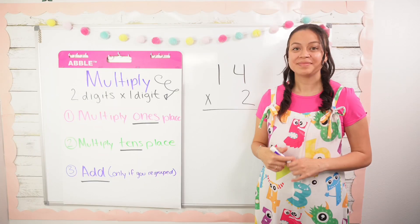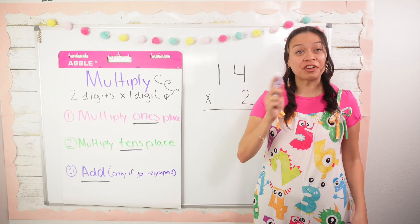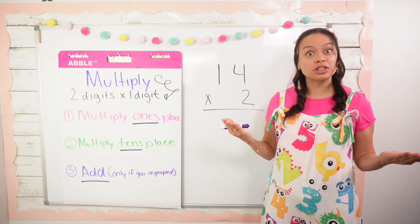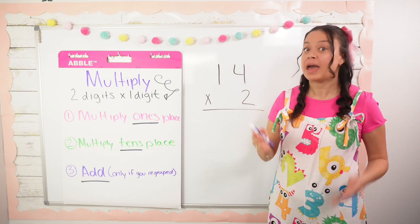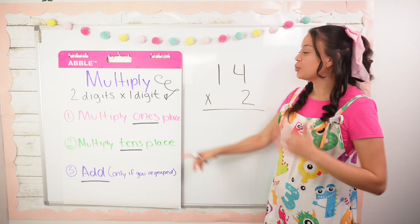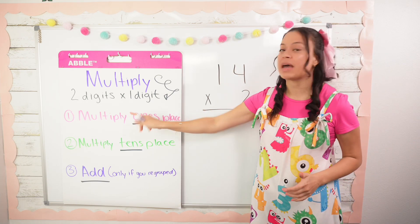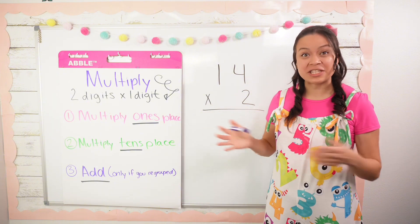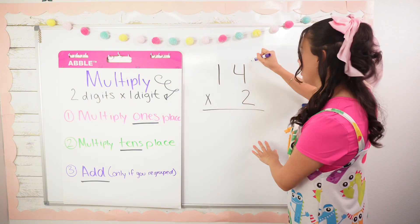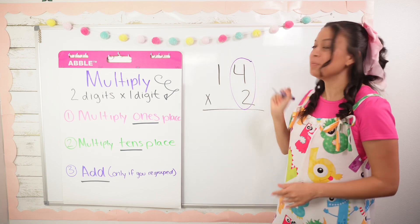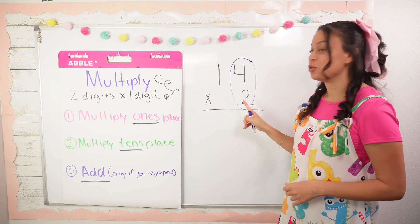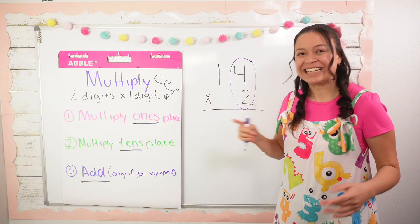Our first example is 14 times 2. I've already lined up my numbers using place value. Step one: multiply the ones place. I like to draw a little butterfly wing so I can easily see the ones place. So 4 times 2 is 8.